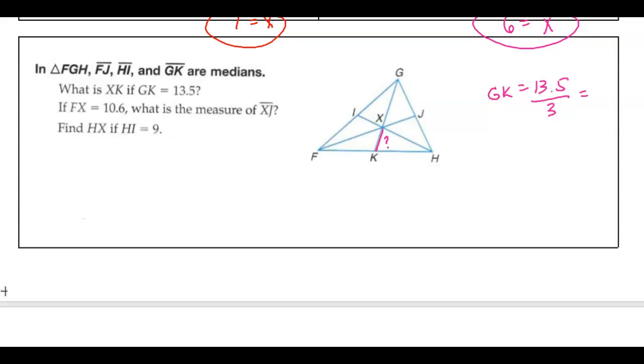So 13.5 divided by 3. And I got 4.5. So that means that this is 4.5, and if I double that, that's going to be the top because that's 1 third and the top was 2 thirds. So times 2 gives me 9 for the top part. They only asked for that. So XK equals 4.5. Remember, the bottom portion is 1 third.